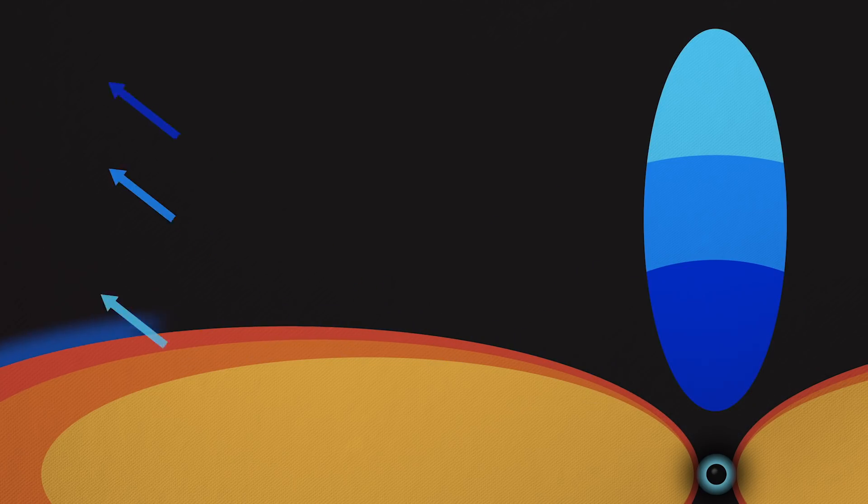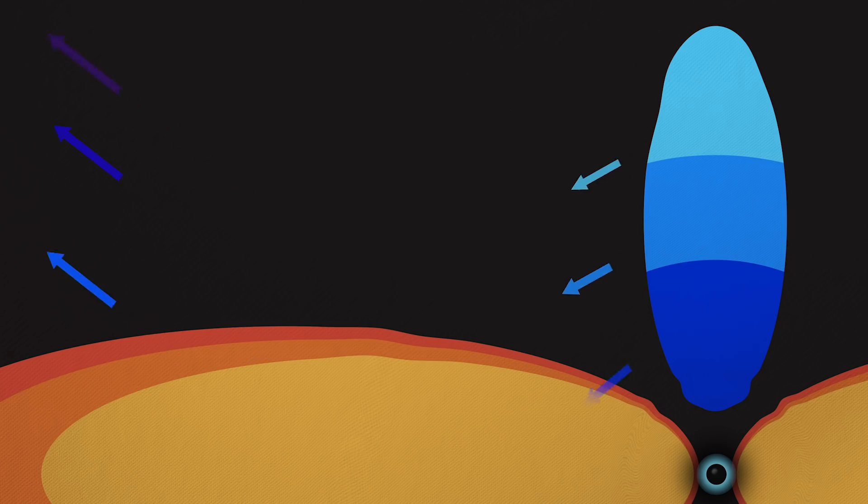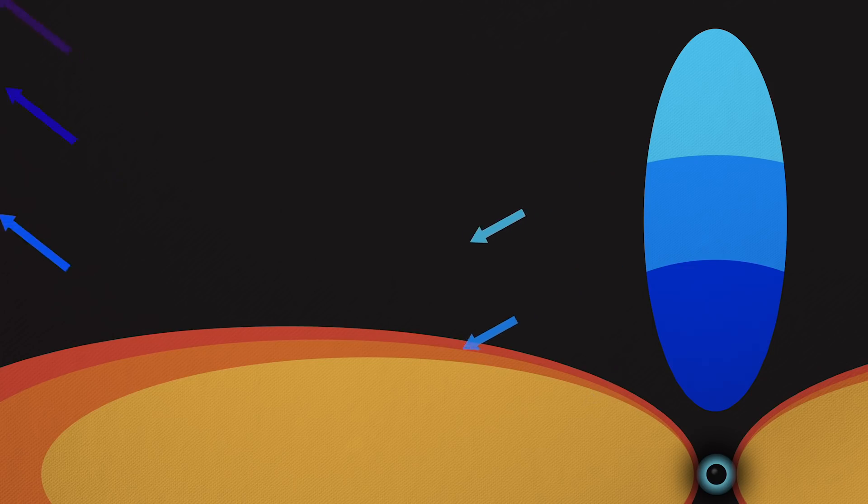Iron atoms in the disk absorb X-rays from the corona and then re-emit them. Gravitational distortion of space-time stretches the wavelengths of the X-rays, reducing their energy. The farther from the black hole they are, the less the light is affected.